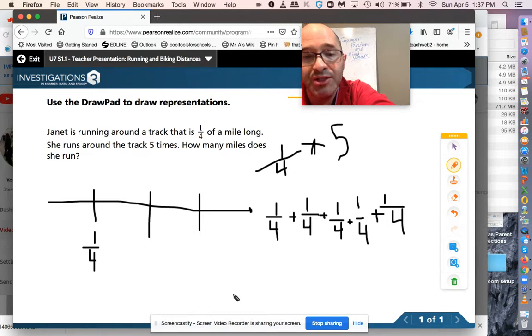We know when we add with fractions, the denominator stays the same. When there's a common denominator, the denominator stays the same. And then, one-fourth, two-fourths, three-fourths, four-fourths, five-fourths. One-fourth five times is the same as five-fourths.